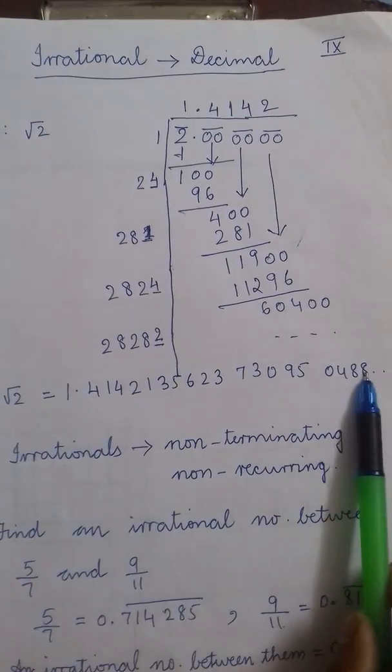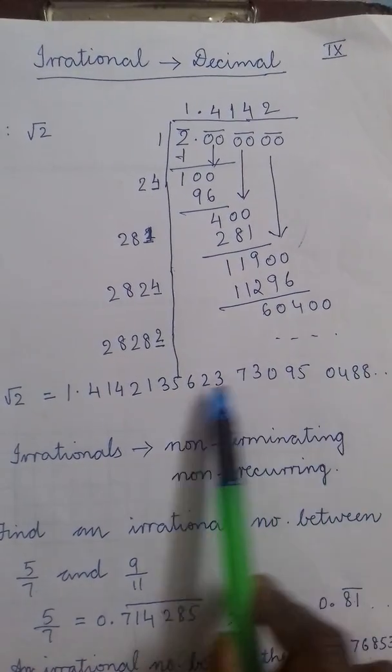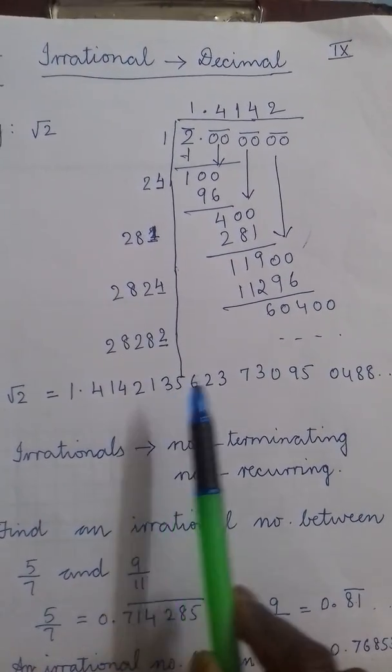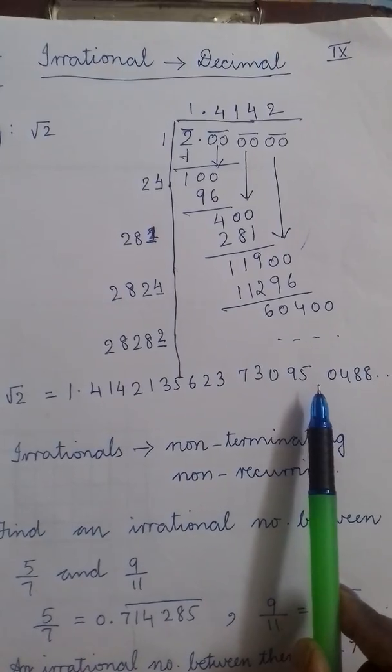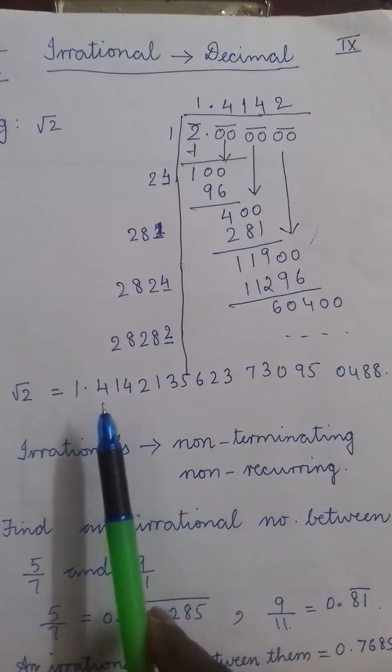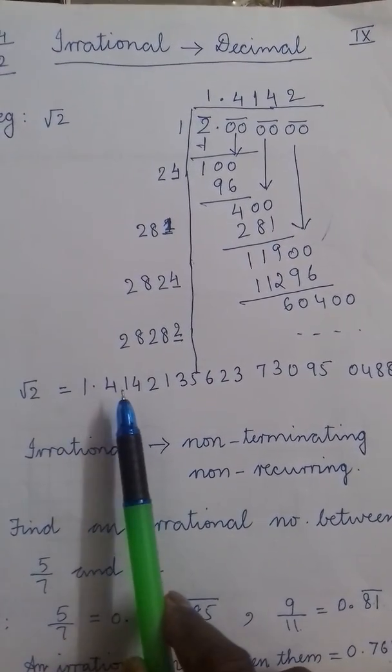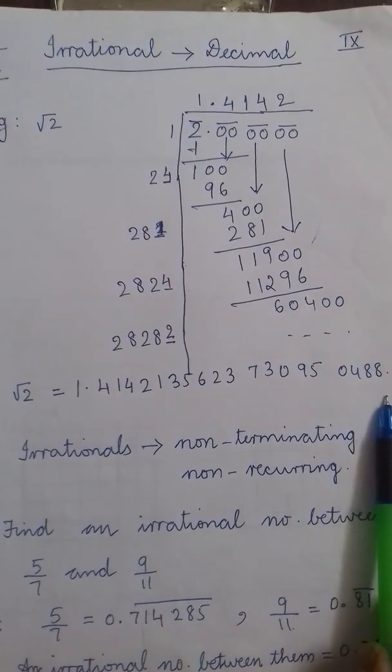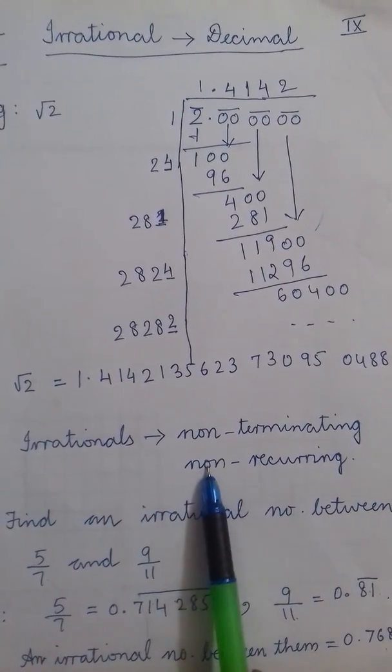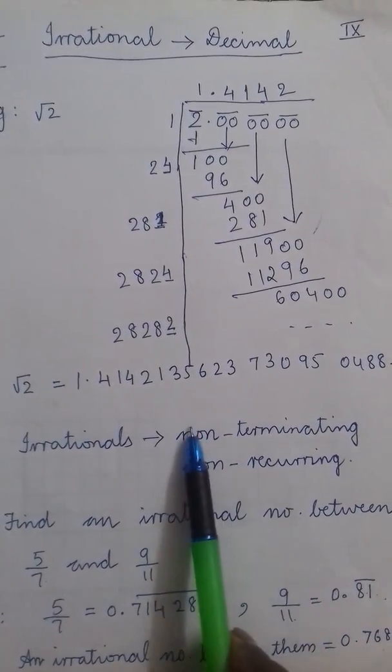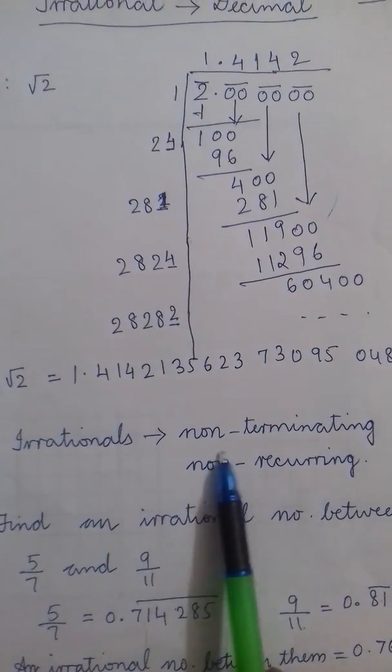In all these digits, not even a single digit is repeating after a particular interval of time. So we can see that this expansion is non-terminating, non-repeating or we can say non-terminating, non-recurring.